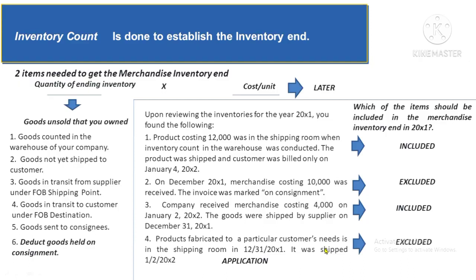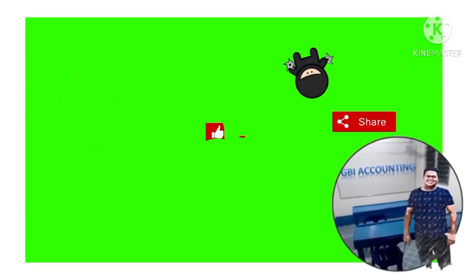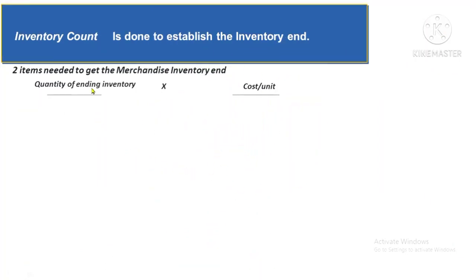That covers the quantity of inventories owned. Next: how do we get the cost per unit? We can get the exact cost using the Specific Identification method, but only when the goods sold are very few and highly valued. If goods are small-value items purchased in large quantities at different dates and prices, then specific identification is not possible or is too time-consuming.